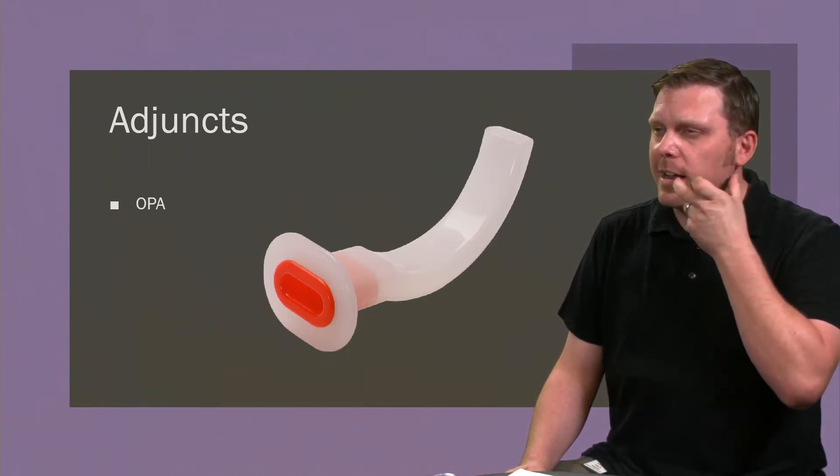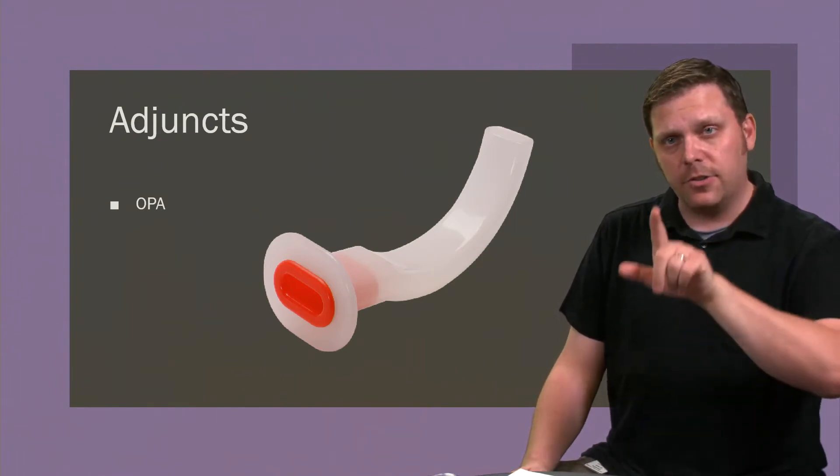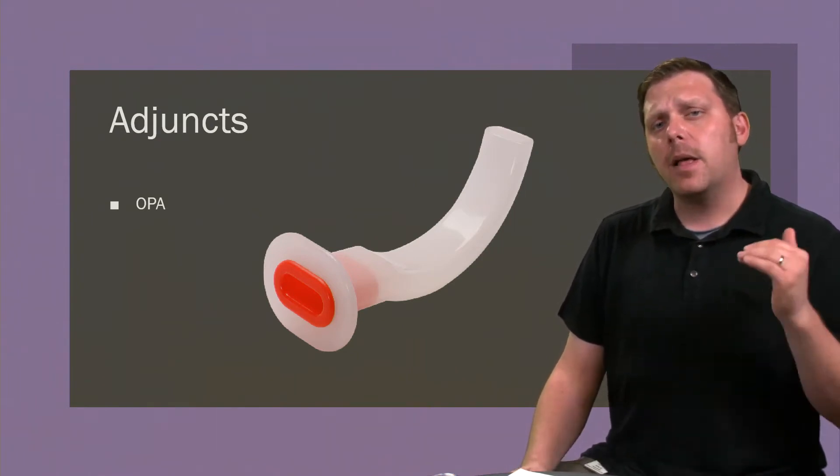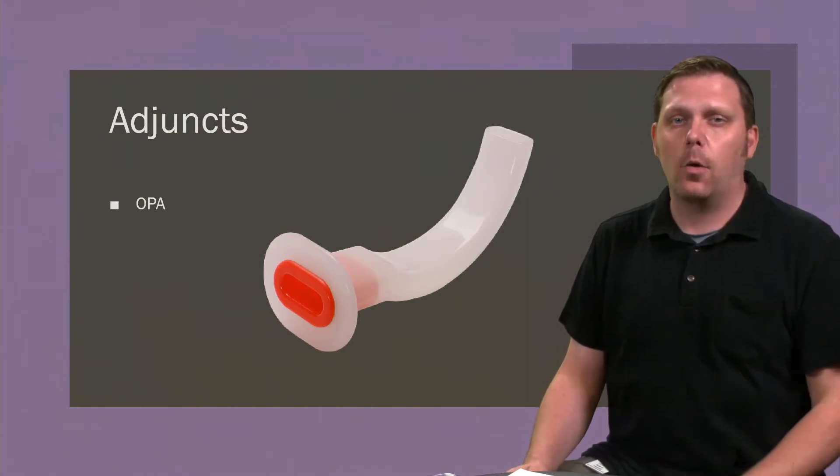If it fits right in there, then at that point we know it's not going to be occluding the tongue by going too far and curving back up and we also know that it's not going to be too shallow pushing the tongue down into the back of the oropharynx.